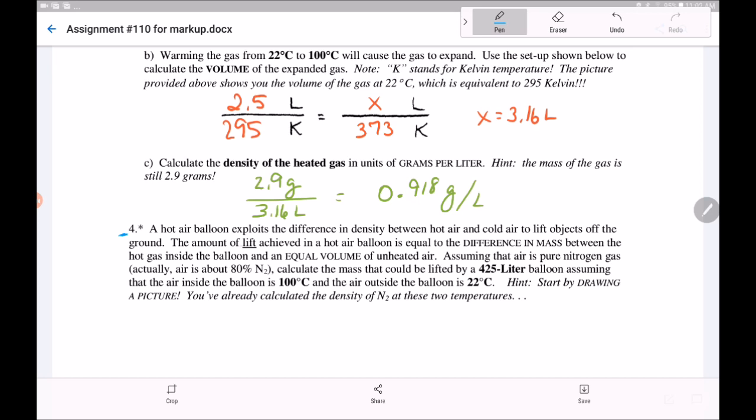Read the words. We're looking for the amount of lift achieved in the hot air balloon. Difference in mass means subtraction is needed, difference is subtraction, between the hot gas inside and the equal volume of unheated air.